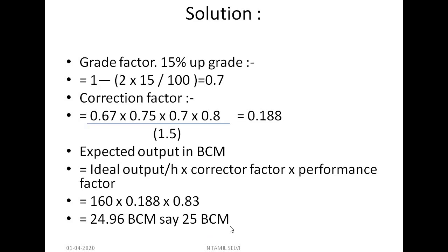Expected output = ideal output × correction factor × performance factor = 160 × 1.118 × (50/60) = 24.96 BCM (bank cubic meters). To summarize: take the ideal output given in the problem, multiply by all correction factors (calculate the grade factor, divide by swell factor), then multiply by the performance factor to get the output in BCM. This method applies specifically to dozers.